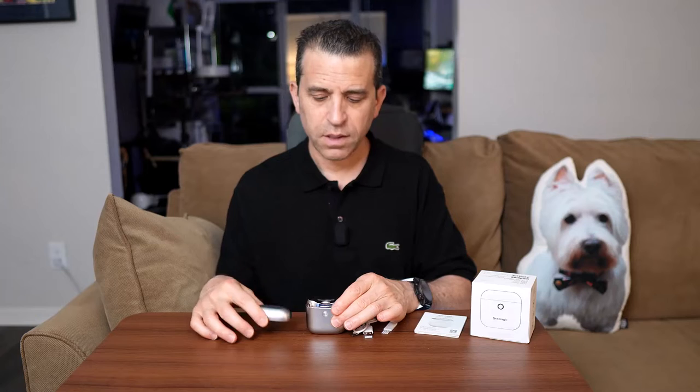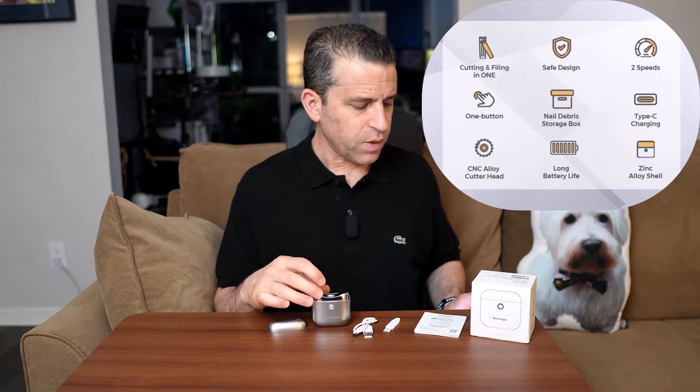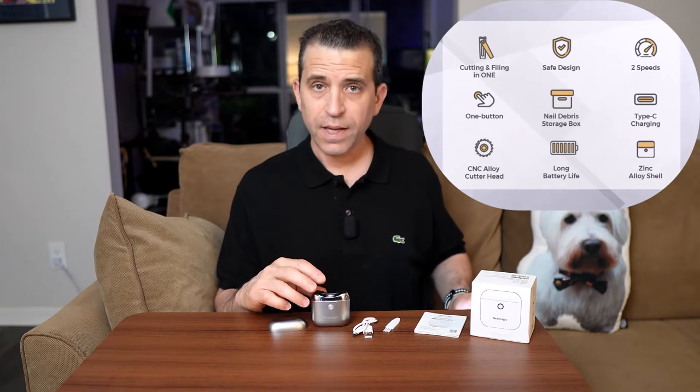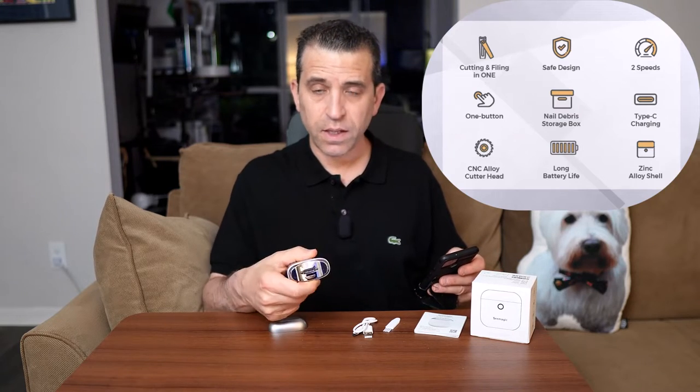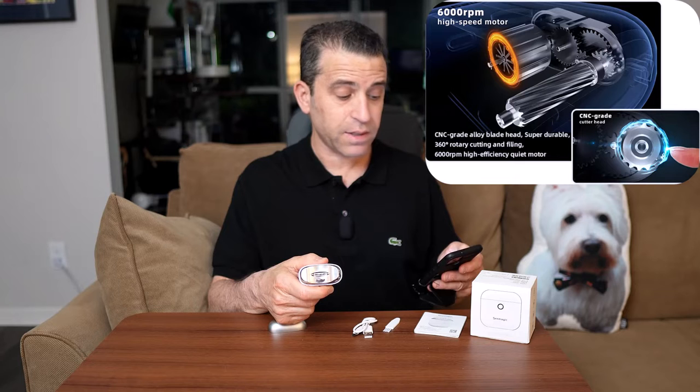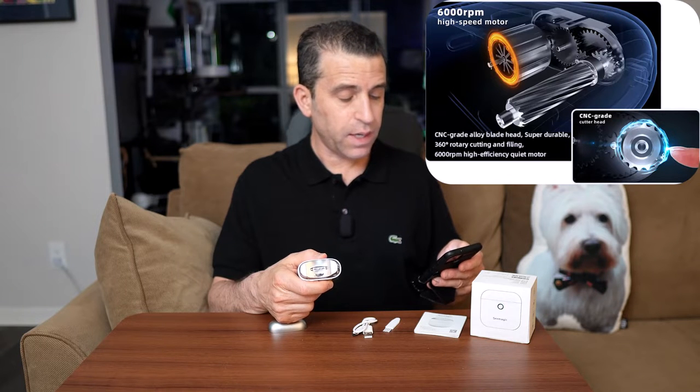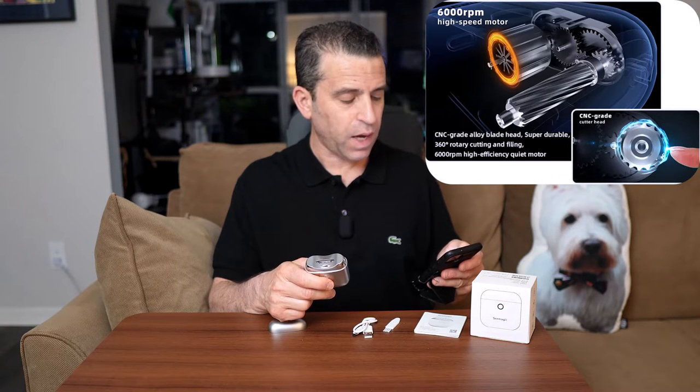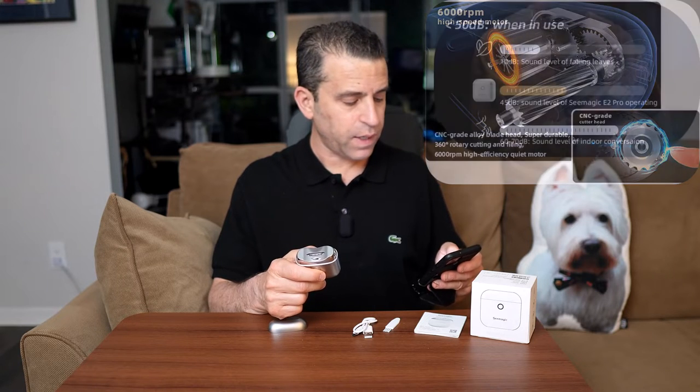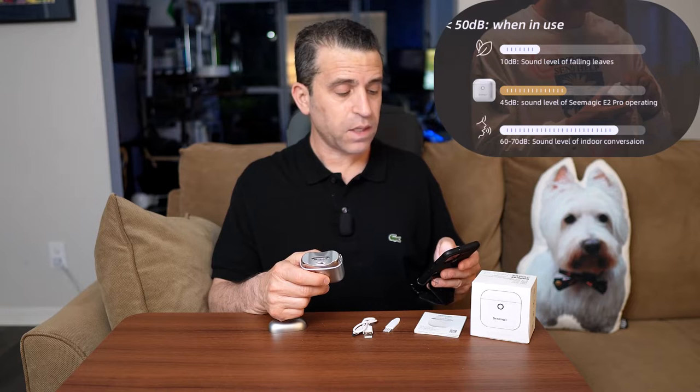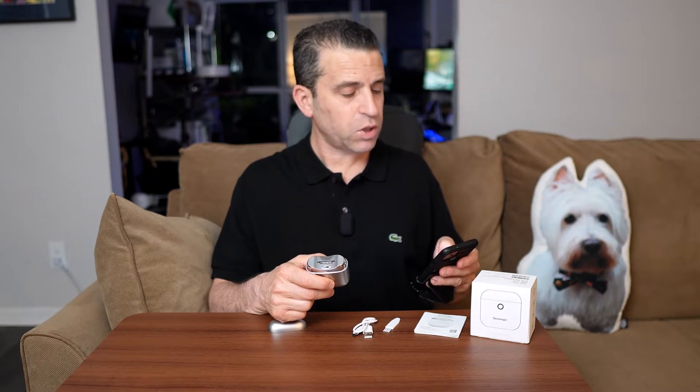Now let's talk about the product. It feels like almost like a paperweight, it's heavy. This is a precision alloy metal case. The cutter where it's cutting your nails is a CNC grade cutter head that offers a fast and easy way to trim your nails. It has a 6,000 RPM high-speed silent motor. It is very quiet and I'll demonstrate that to you. It does come with a built-in 600 milliamp rechargeable battery and it seems like from what they say here it can be used 30 times on a single charge.